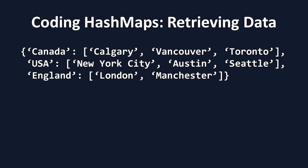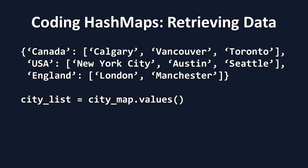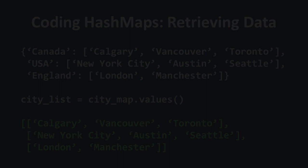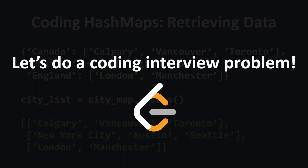Here's an updated version of our city map from earlier. As you can see, it now has multiple countries and cities. If we wanted to get a list of only the cities, we could do so by calling the dot values method like this. Now we have a list of cities in CityList that we have extracted from the HashMap. Now that we've learned how HashMaps work and how to code with them, let's use our new knowledge to solve a popular coding interview problem.